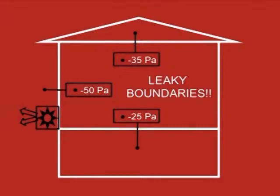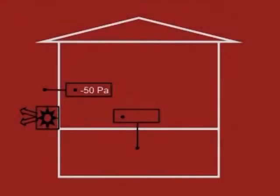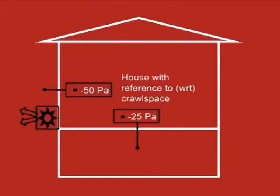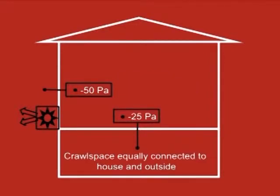The extent of the leakage depends on the recorded value. For example, if we are running the blower door and we want to see how connected the crawl space is to the interior and to the exterior of the building — if we measure the house with reference to the crawl space and we record a pressure difference of minus 25 pascals, we can say that the crawl space is equally connected to the interior and exterior of the building.